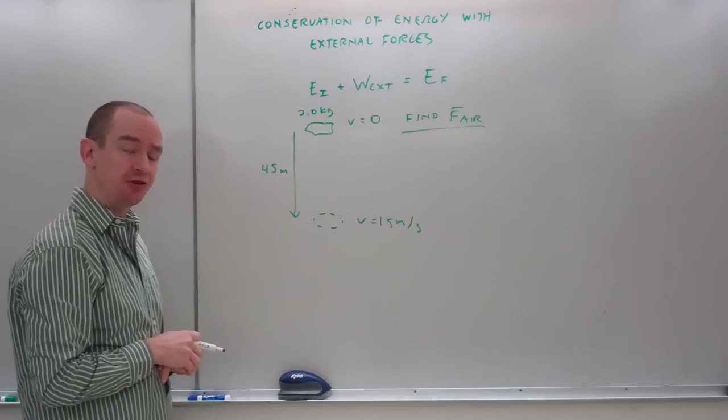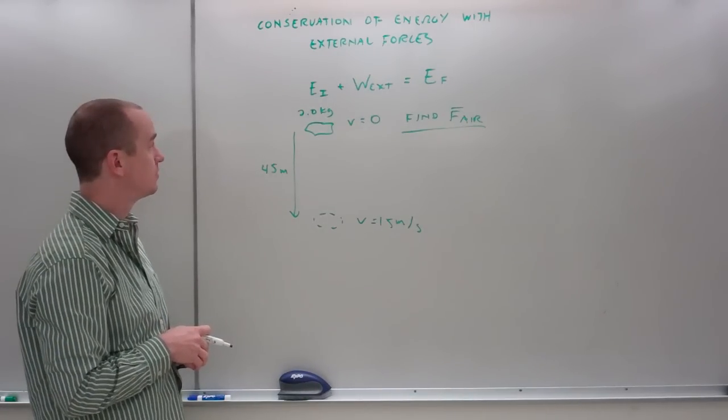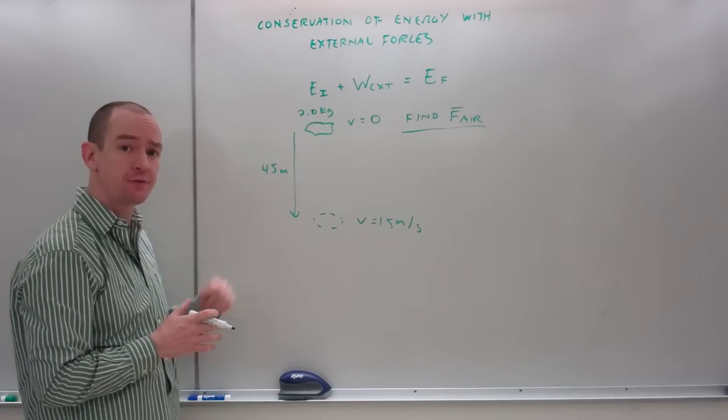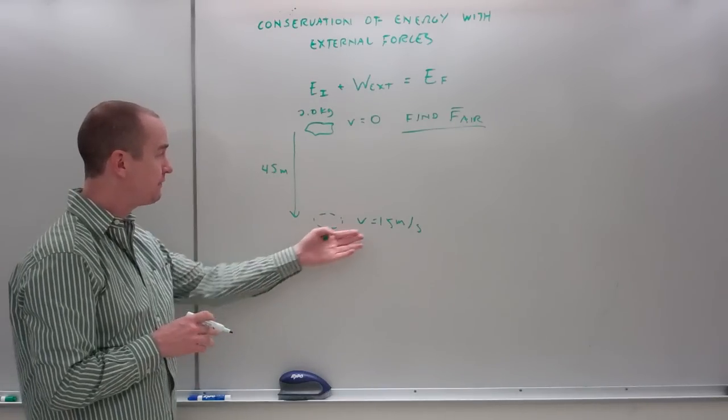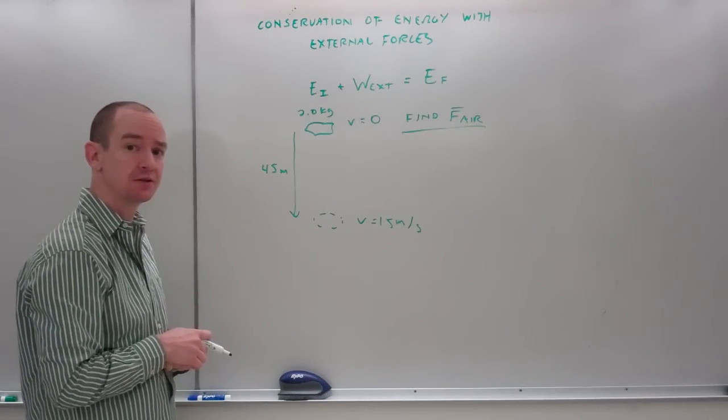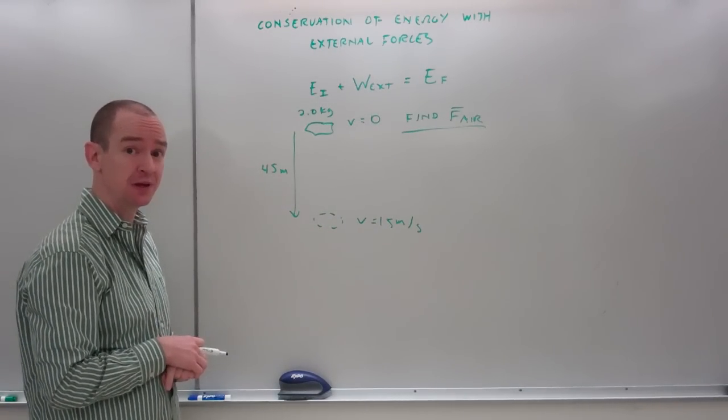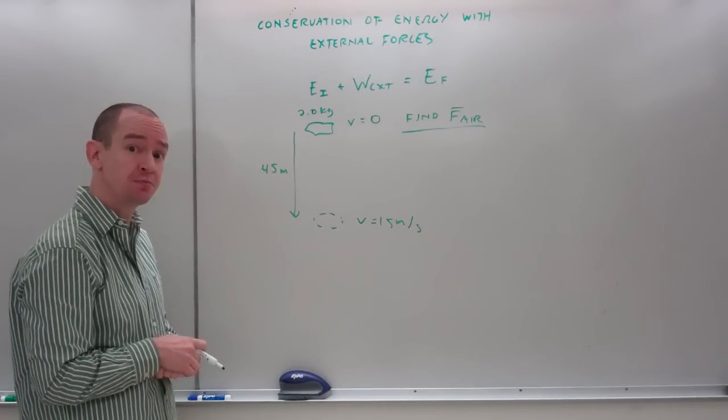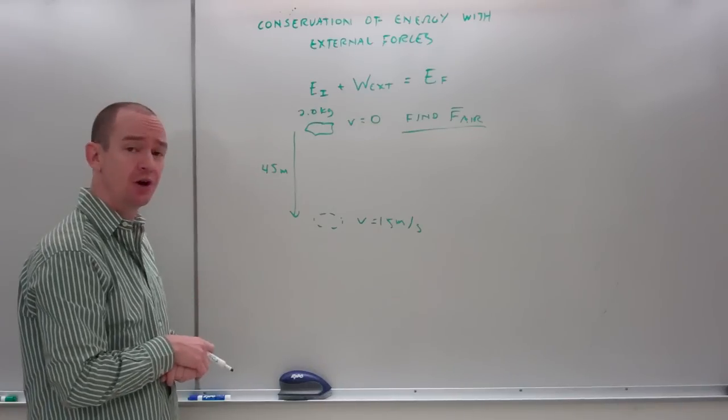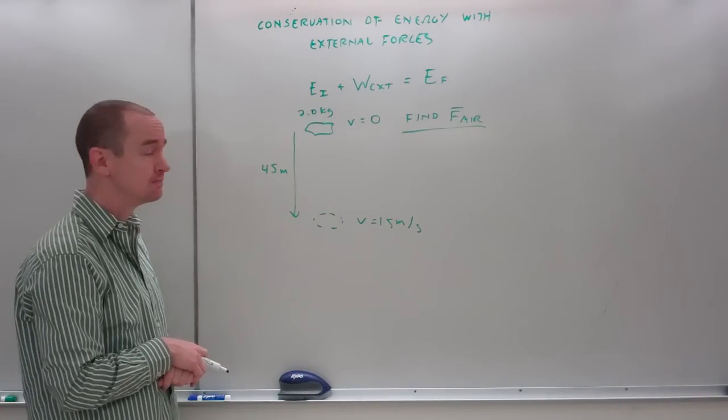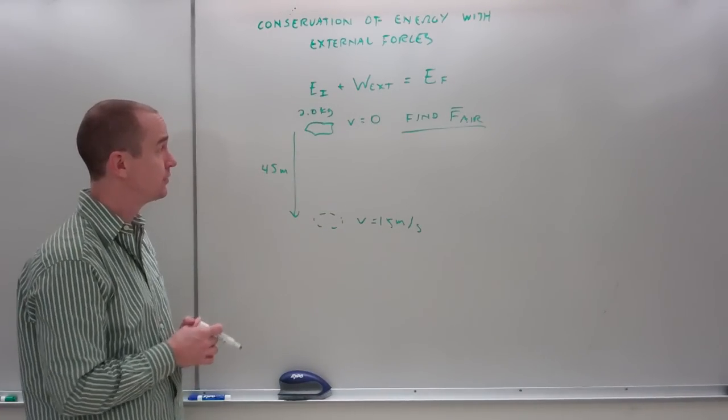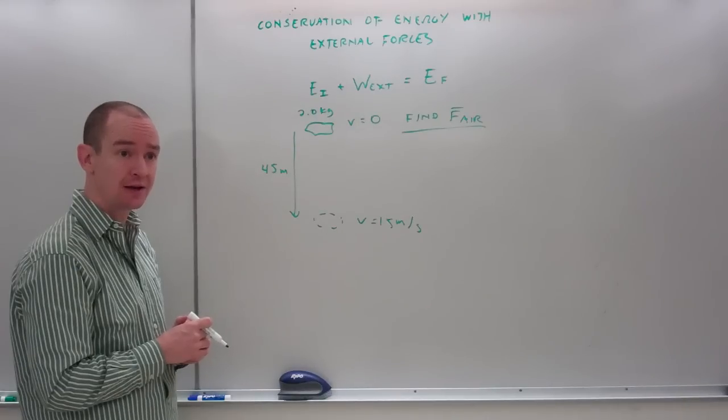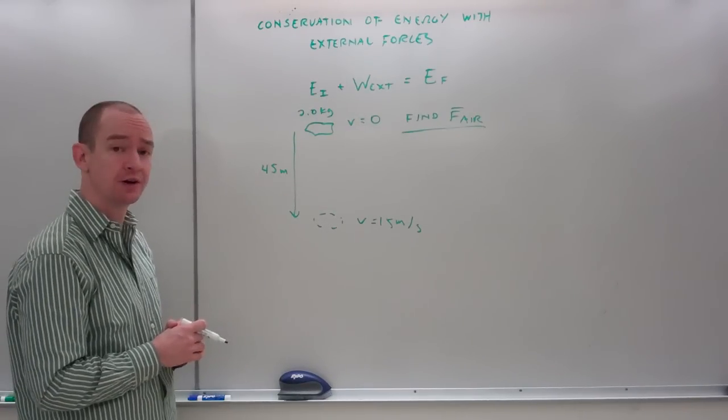Imagine I'm a 2 kilogram object, which I drop from rest. After it falls 45 meters, I find that its speed is 15 meters per second. This is significantly less than it should be, assuming there was no air resistance. So, air resistance is present. I would like to know the force due to air resistance, or rather the average force due to air resistance. Once again, we can solve this using force and kinematics. Instead, we'll solve it using energy.